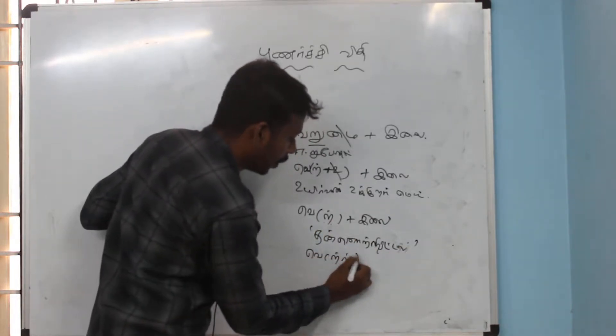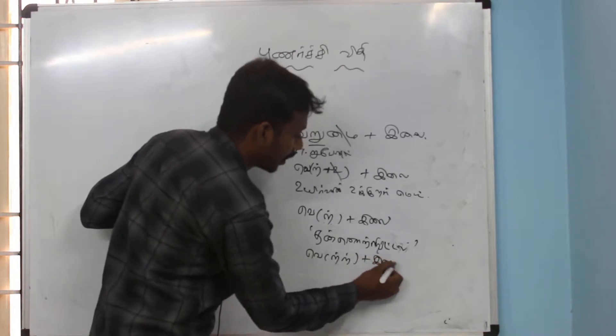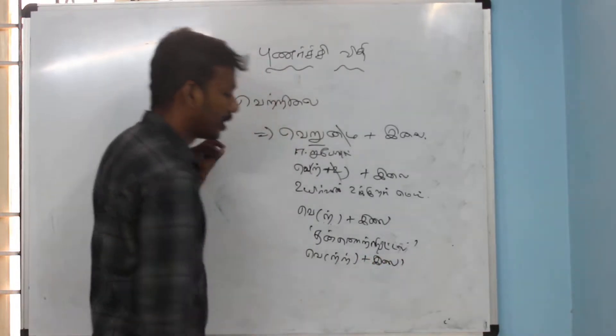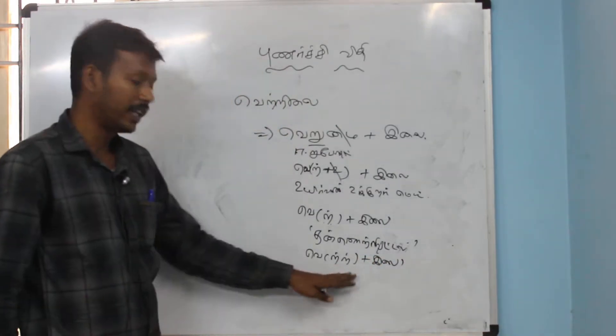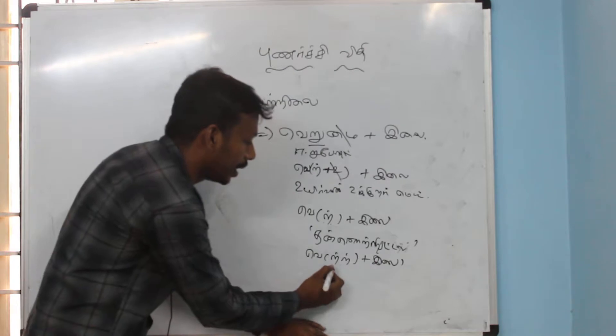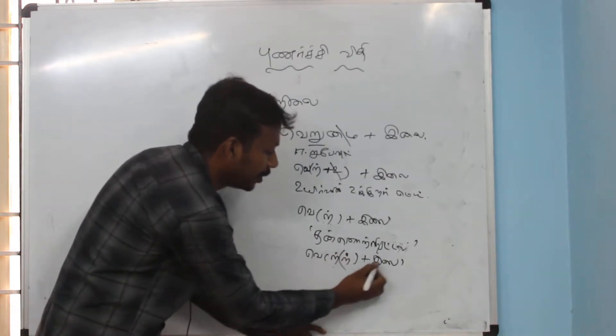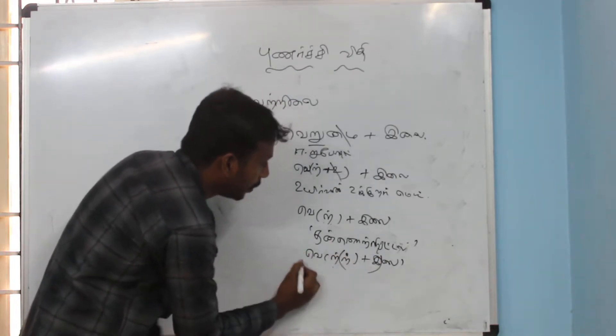That is the 2-0. We have a 2-0. If we cut this one, and we will cut this one, now we will cut this one. The 2-0 is in the same way.